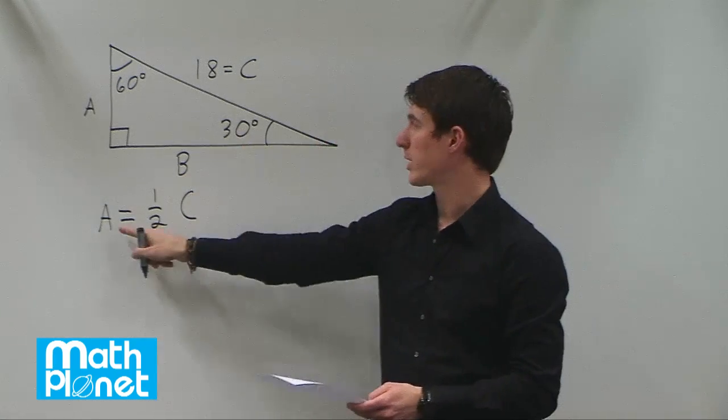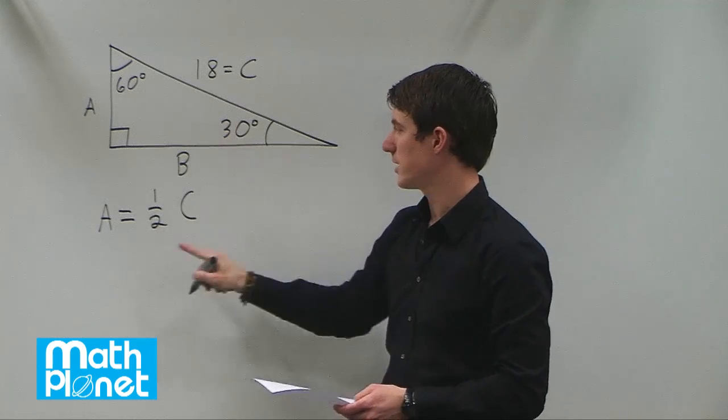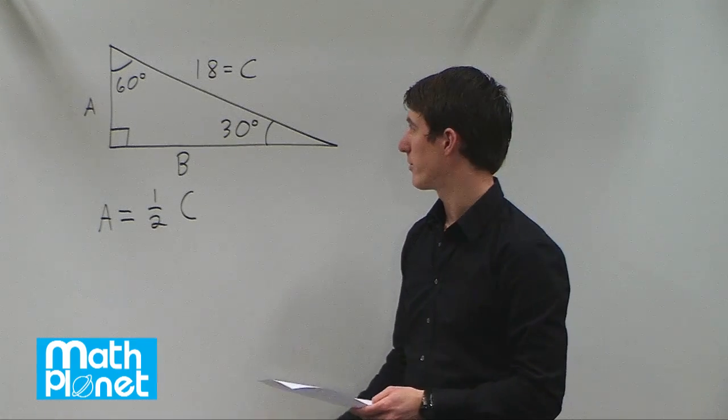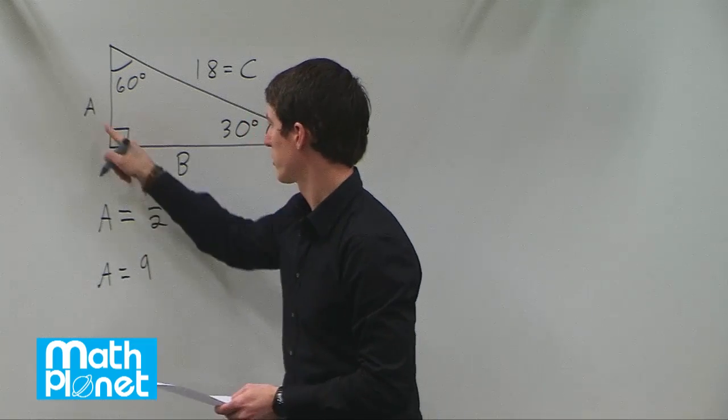So since we know C we can find A and we could have gone vice versa if we needed to. So C is 18, so A is just half of 18. So A is equal to 9. So this side is 9.